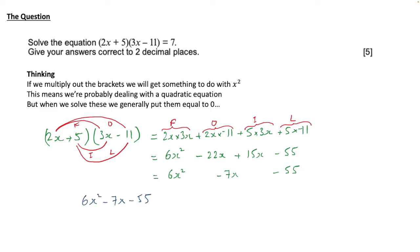Okay, so that's what we've got and that's the original two brackets multiplied, so that must be equal to 7 and, as we thought, we need to put this equal to 0 and to do that we need to take away 7 from both sides, that will leave us with a 0 on the right-hand side and it will leave us with 6x squared minus 7x minus 62 on the left.